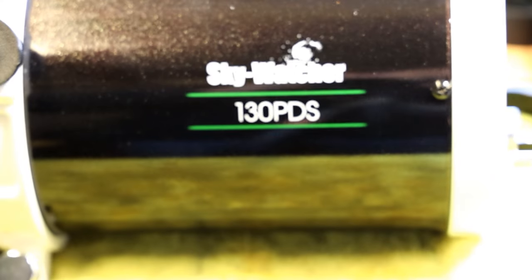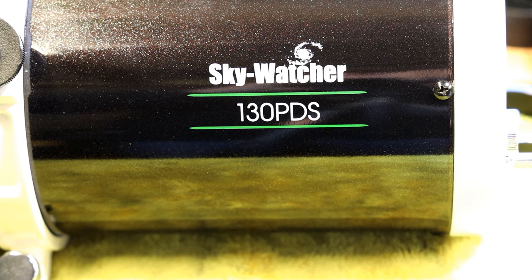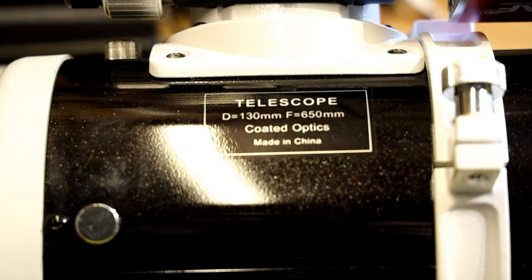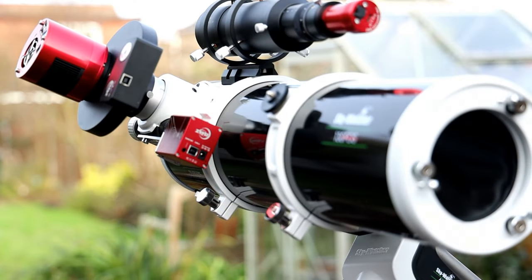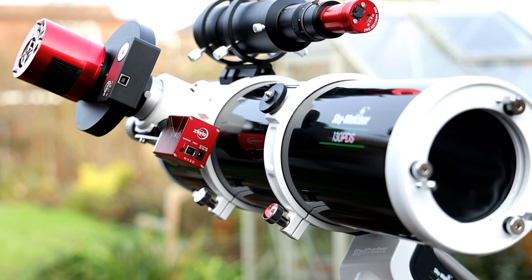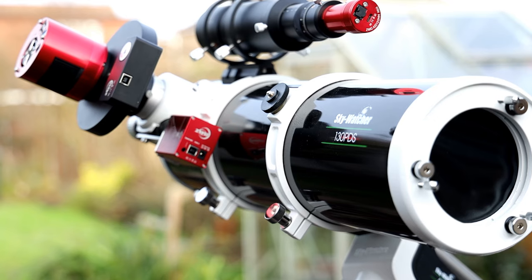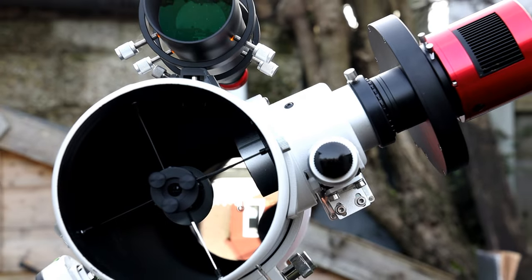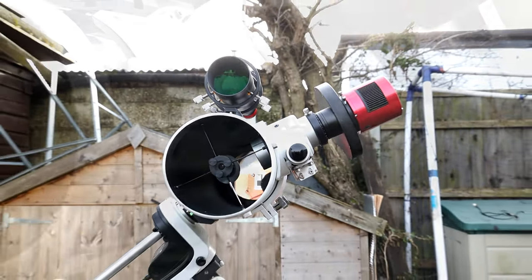The Skywatcher 130 PDS is an excellent choice as a budget scope for astrophotography. It has a focal length of 650 millimeters and an f-stop of f/5. The scope weighs around 4 kilograms. The only difference between this and the 130p is it's slightly shorter, which allows focusing a lot easier with a DSLR. In fact, you only need a T-ring and you can attach it to the DSLR and just start taking images.